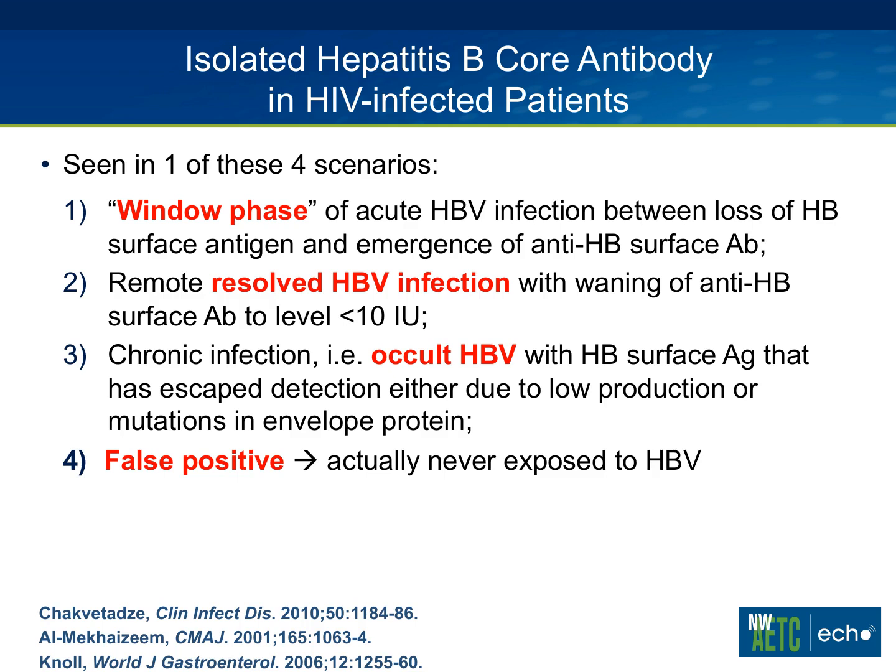The second scenario is someone who has seen hepatitis B, resolved their infection, but had waning of their surface antibody to below our limit of immunity, which is less than 10 international units. Third, you can have chronic infection manifesting as an isolated core — this is occult hepatitis B infection — where the surface antigen has escaped detection either because it has waned due to low production, or the patient gained better immune control and lost their surface antigen, or they developed mutations to the envelope protein that escaped detection by standard assays. Like HIV, hepatitis B has poor replication fidelity and can develop many mutations under drug or immune pressure.